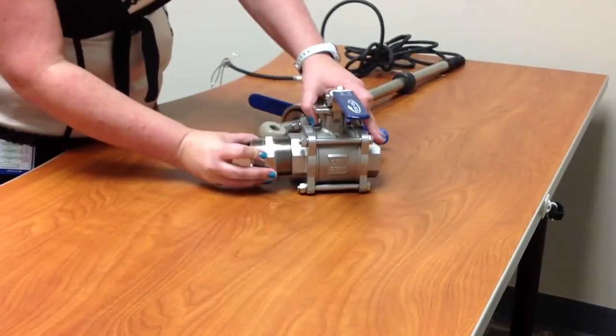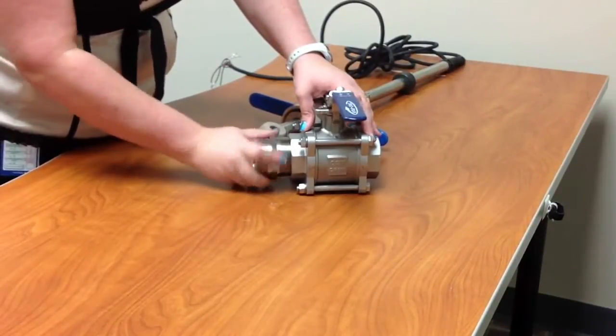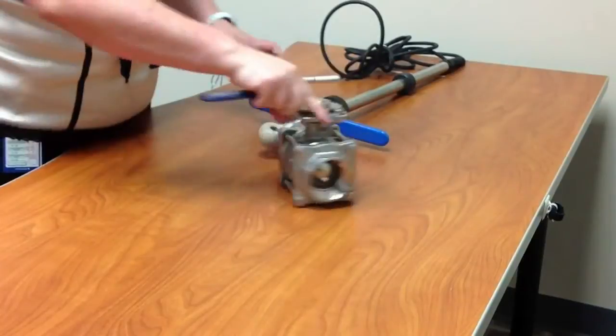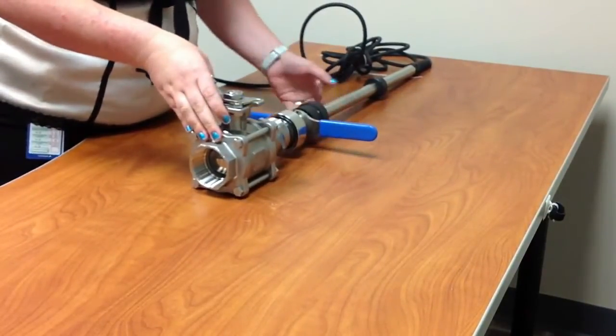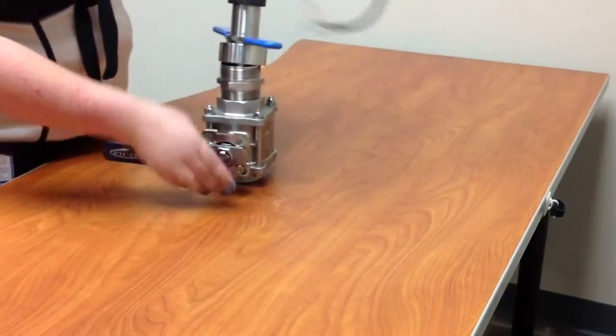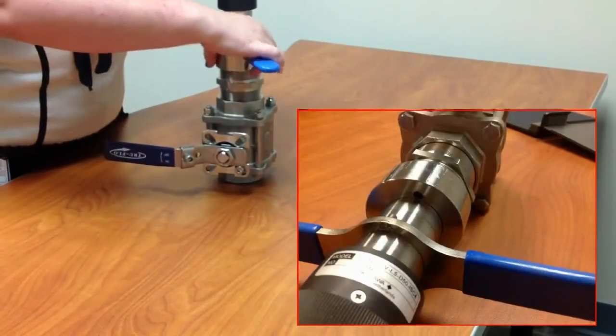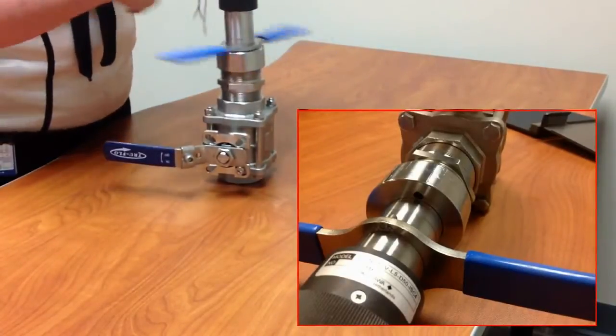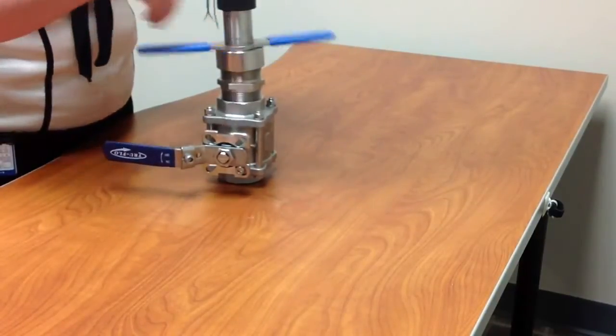Basically, your ball valve's in the off position, and you will thread the process adapter into your ball valve. Then you put your PR-10 onto your process adapter, line up the notches on the T-handle and the nut, and thread the nut onto your process adapter to lock it on there.